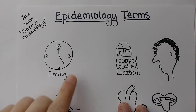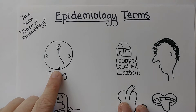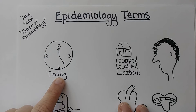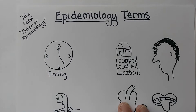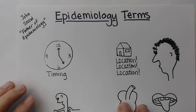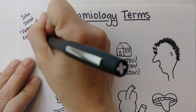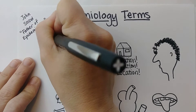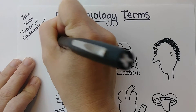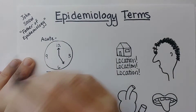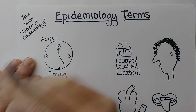So let's go ahead and go through some terms. I want to start out with epidemiology terms that have to do with the onset of a disease. If something is acute, that means it had a fast onset.